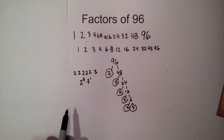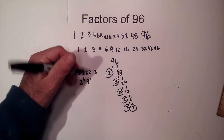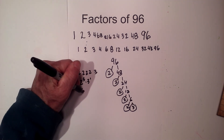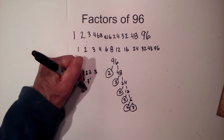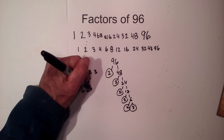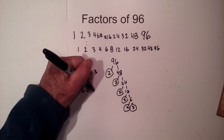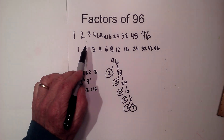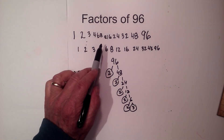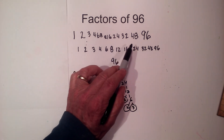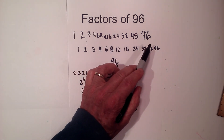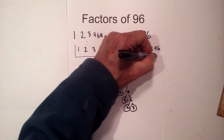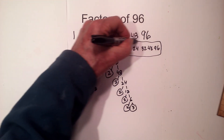I can check to see if I have all the factors by adding 1 to each exponent: 5 plus 1 is 6, and 1 plus 1 is 2. 6 times 2 is 12, so I should have 12 factors. Counting them: 1, 2, 3, 4, 5, 6, 7, 8, 9, 10, 11, 12 — I have 12 factors. So here are all the factors of 96.